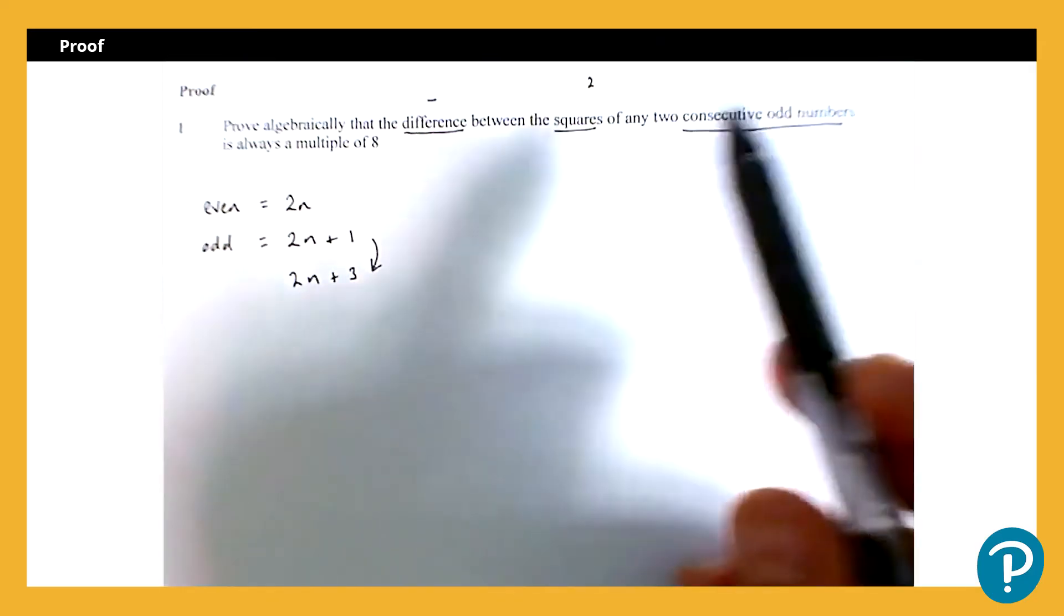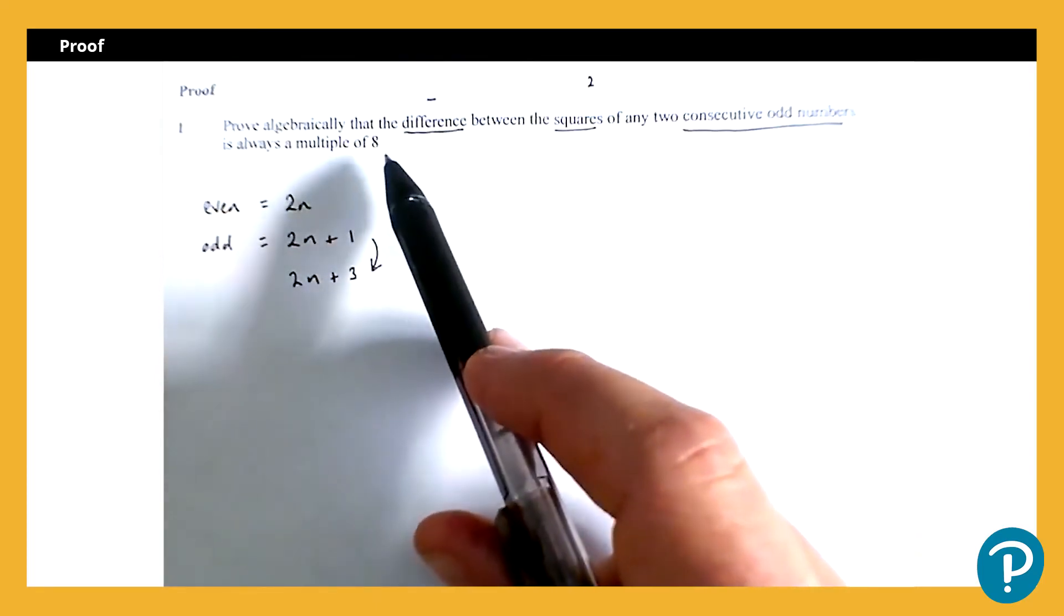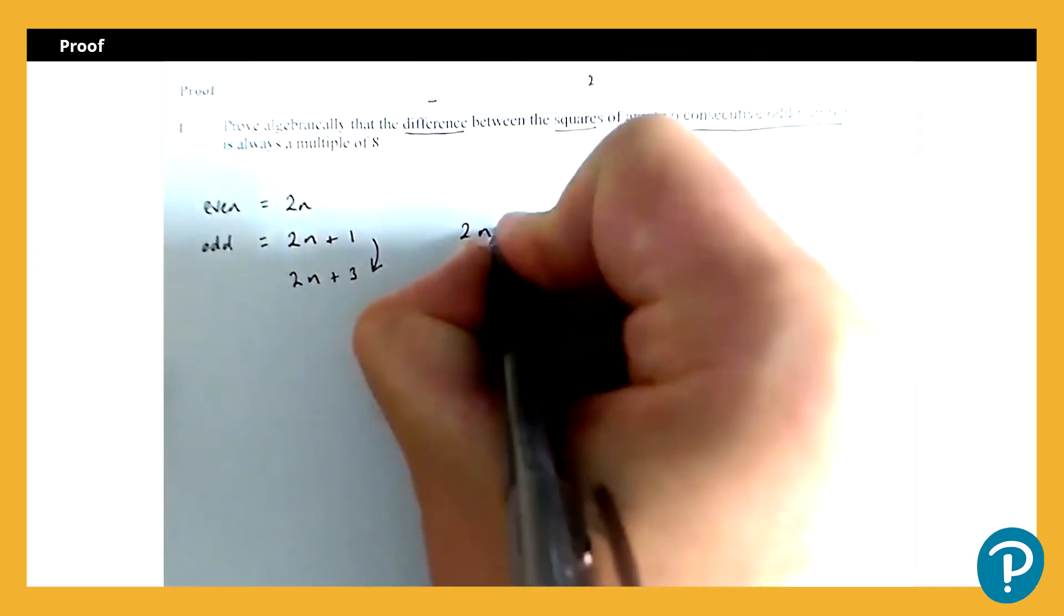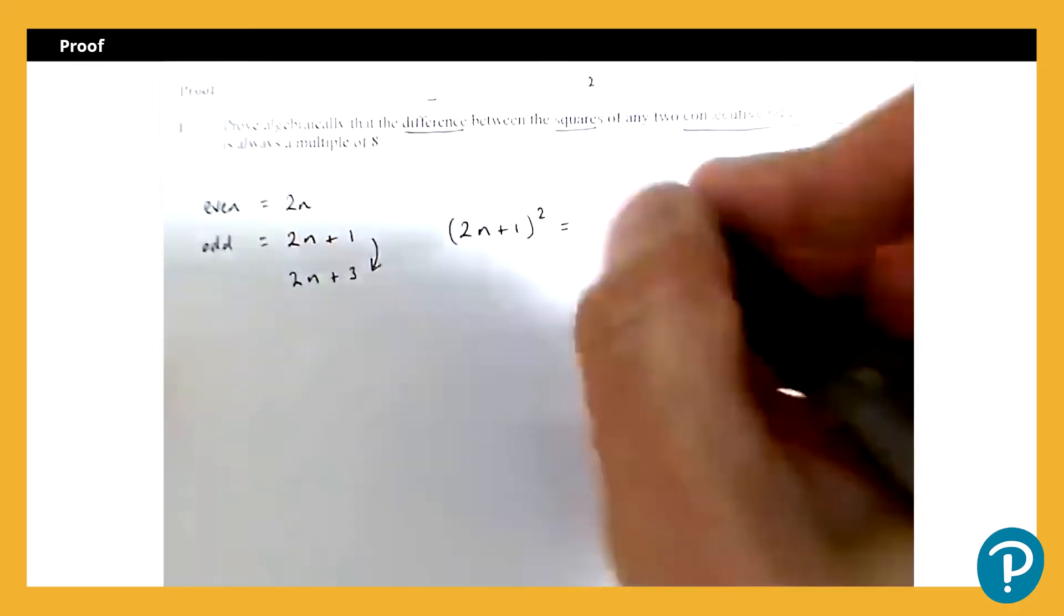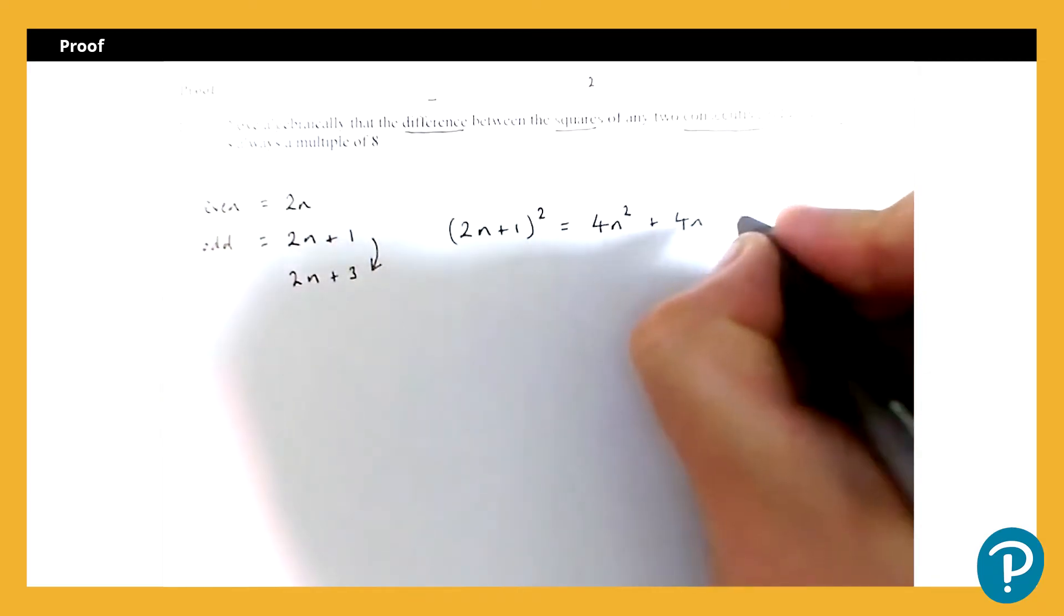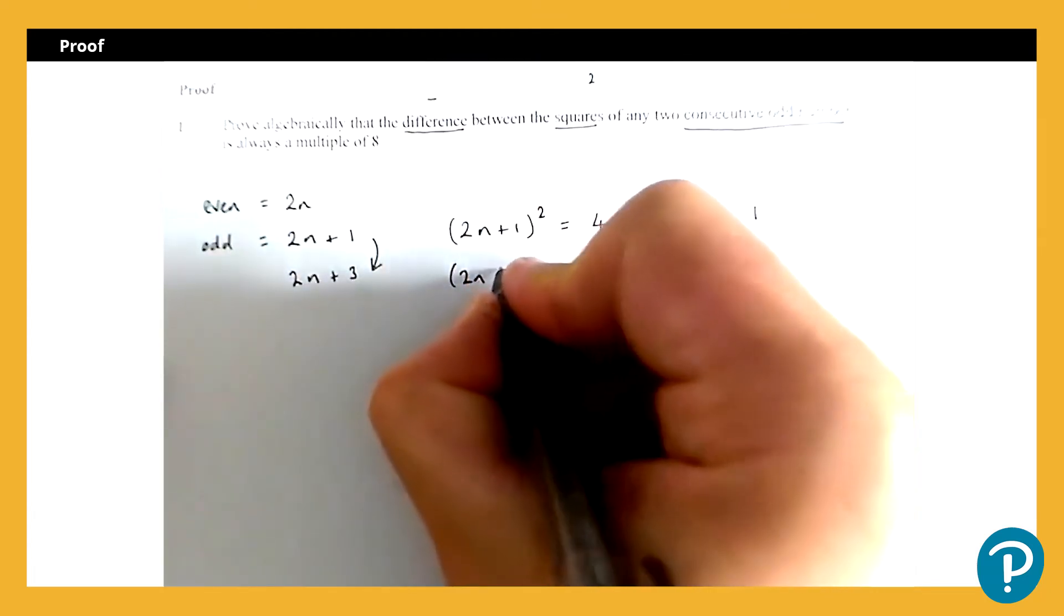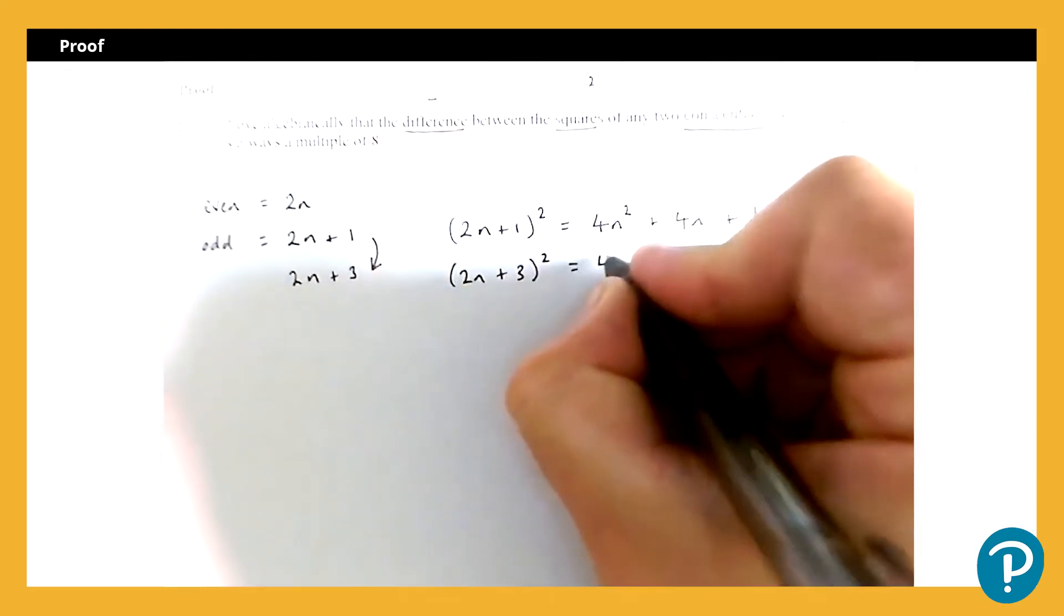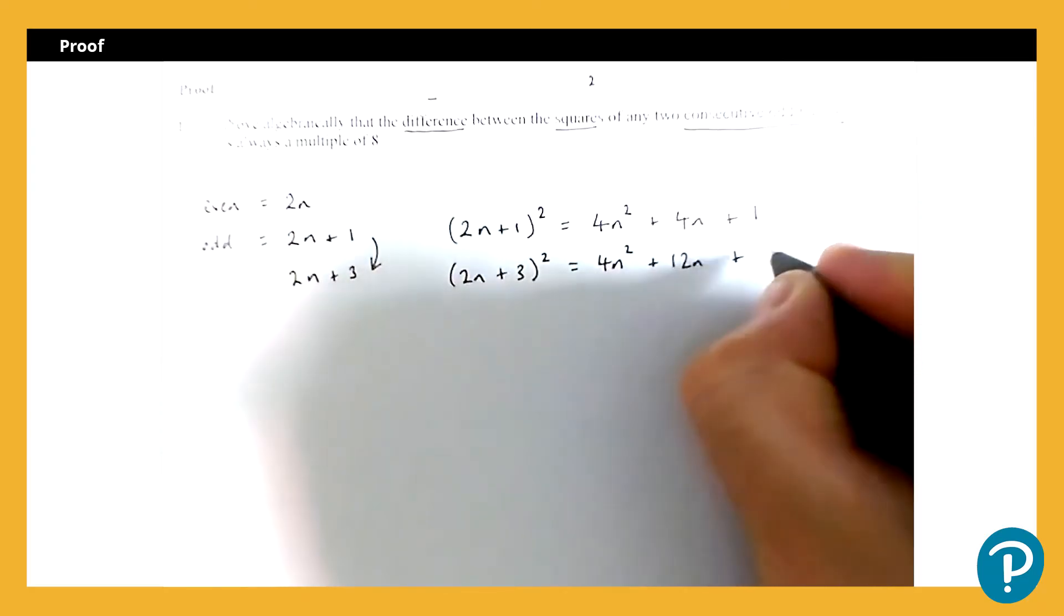So we've got our odd numbers. Next we need to square them, then we need to find the difference, and then we need to show that's a multiple of 8. So first job here would be to square them. We've got 2n plus 1 squared, simple enough bracket that we should be able to expand quite easily. So we're going to have 4n squared plus 4n plus 1. And then the second one, 2n plus 3 squared, is going to give me 4n squared plus 12n plus 9.